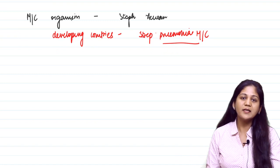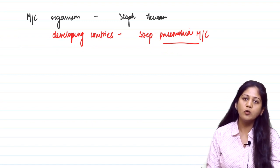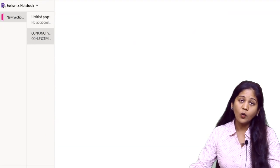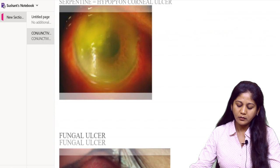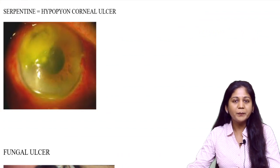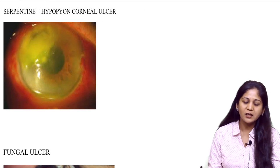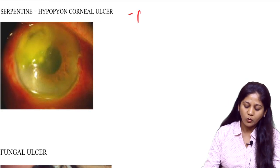This is a very special type of ulcer caused by pneumococcus. This is called a creeping corneal ulcer or serpentine ulcer. You can see very well in this picture that this is a special ulcer caused by pneumococcus.